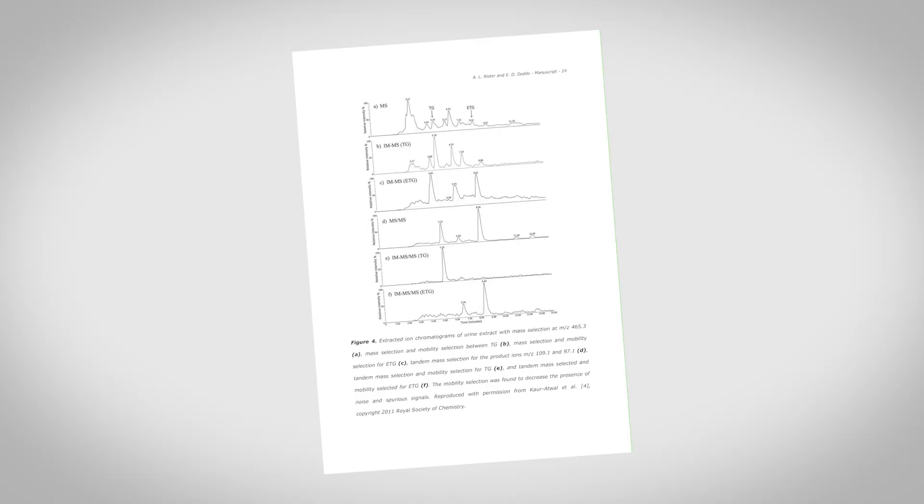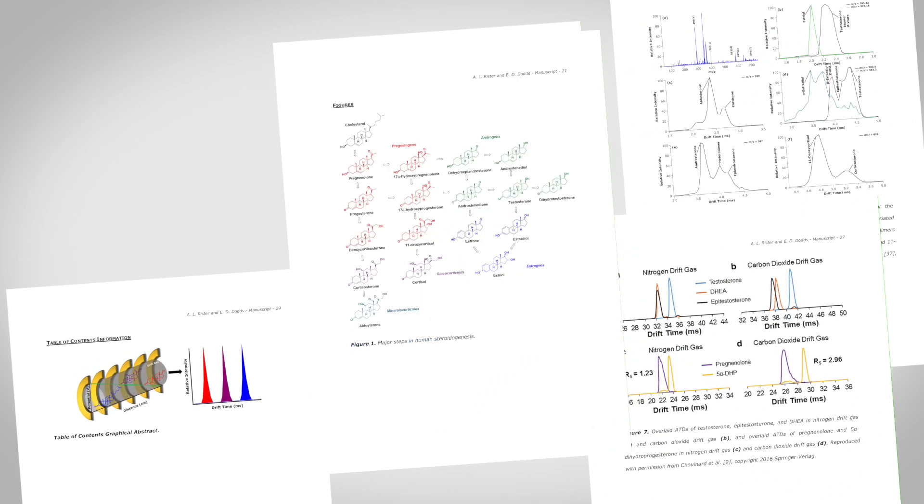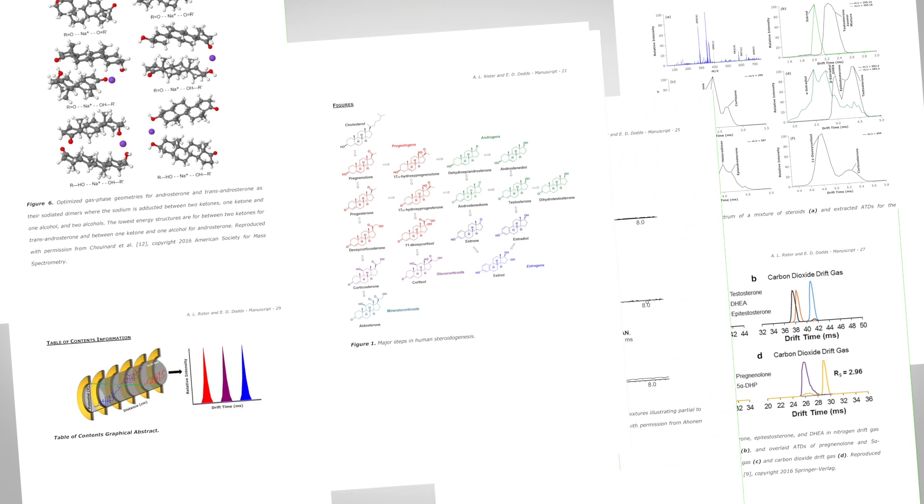A figure outline is simply the figures and tables that you're going to have within a research article, or even within a review article if you're going to reproduce images from other papers. What a figure outline allows you to do is it makes it really easy to tell a story. It's basically like giving a presentation — in your results section, all you're going to see slide by slide is just your figures. If you can look at a figure and explain the conclusions that come from it, that's all you're really doing in creating a figure outline — creating those visuals so that you can talk through it instead of having to write through it first.